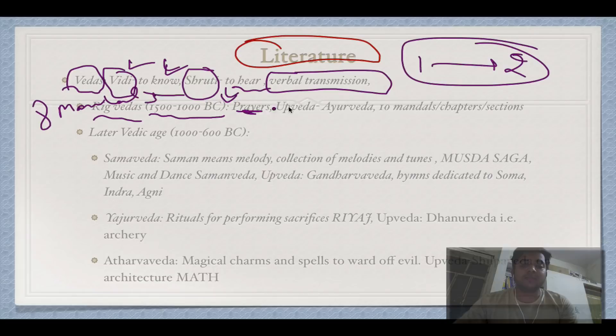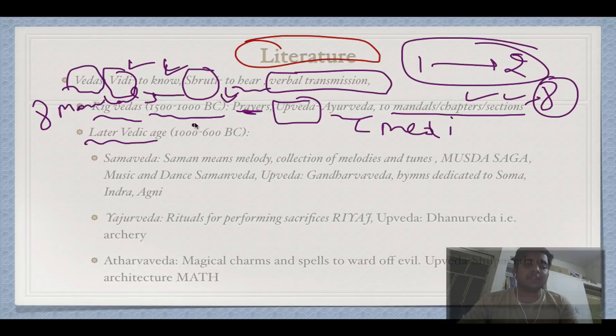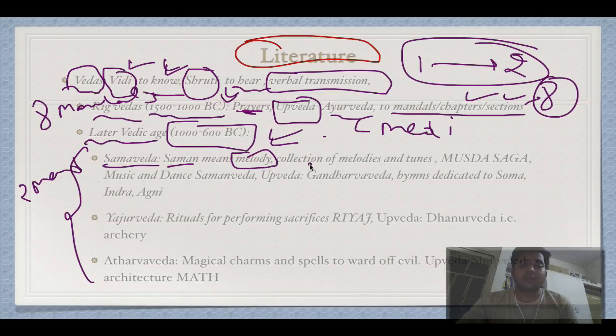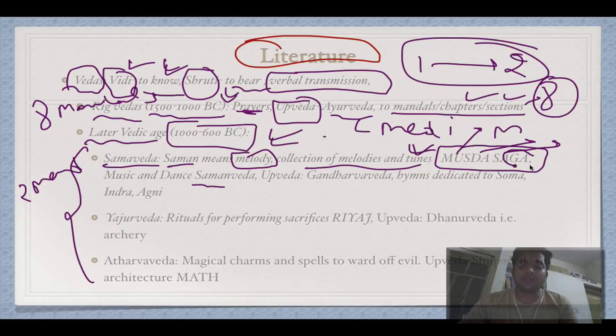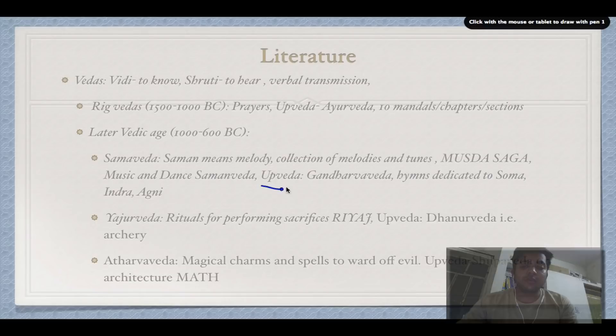The Rigveda has 10 mandals, of which the first eight were written in the early period. 'Mandal' means chapter or section. The later Vedic age spans 1000 to 600 BC, during which the last two mandals and three more Vedas were written. Samveda means 'Saman' — a collection of melodies and tunes. To remember this, use the mnemonic 'Musda Saga' — music, dance, and Saga meaning Samveda. Its Upveda is Gandharva Veda, related to music and dance.